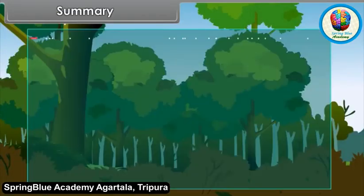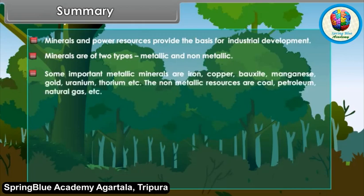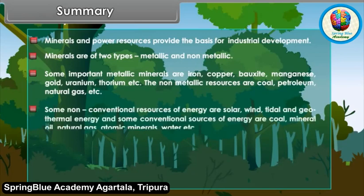Summary: Minerals and power resources provide the basis for industrial development. Minerals are of two types: metallic and non-metallic. Some important metallic minerals are iron, copper, bauxite, manganese, gold, uranium and thorium. Non-metallic resources include coal, petroleum and natural gas. Some non-conventional sources of energy are solar, wind, tidal and geothermal energy, while conventional sources include coal, mineral oil, natural gas, atomic minerals and water.